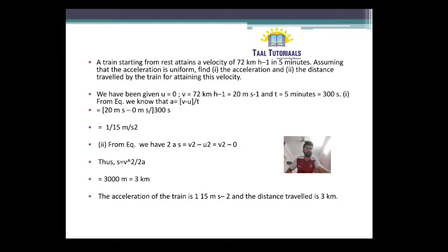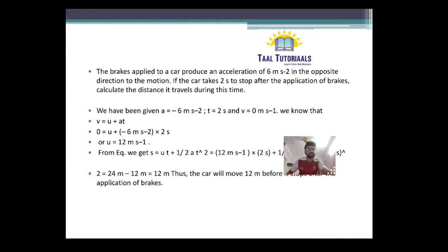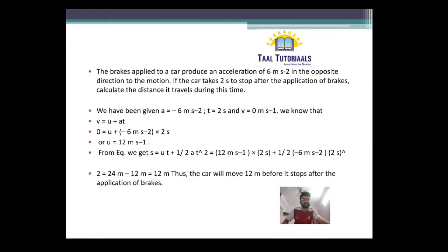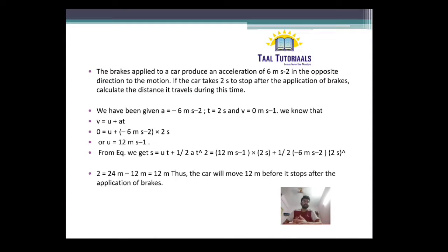We will go to the next question. The brakes applied to a car produce an acceleration of 6 meter per second square in the opposite direction. Whenever it is in the opposite direction, we use retardation, that is a negative value of acceleration. It is given in the opposite direction to the motion. If the car takes 2 seconds to stop after the application of the brakes, we need to calculate the distance traveled during this time.